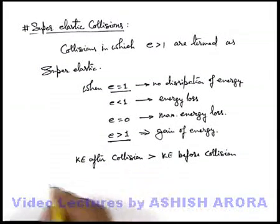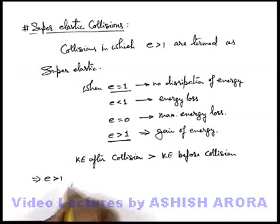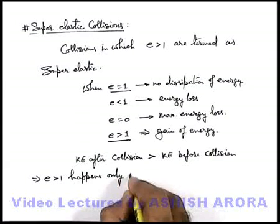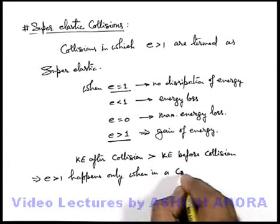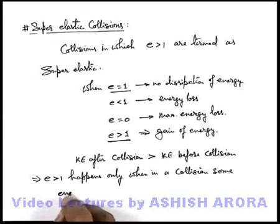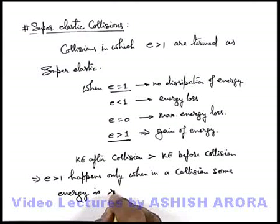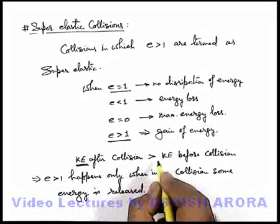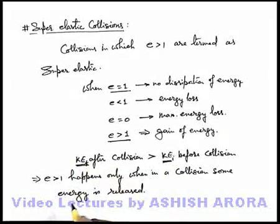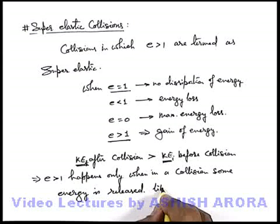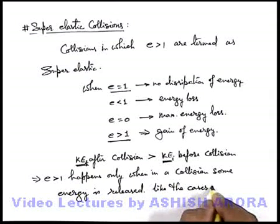So we can state, e more than 1 happens only when, in a collision, some energy is released. Unless some energy is released, final kinetic energy can never be more than initial kinetic energy. So final kinetic energy being more than initial means that during the collision some energy is released, like we can simply state, like the cases of explosion.